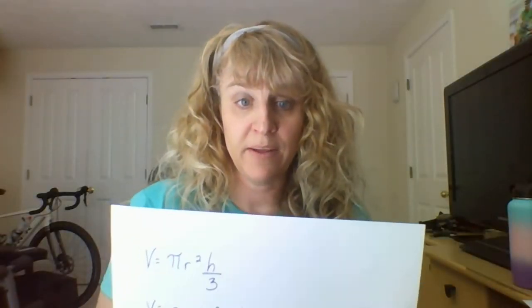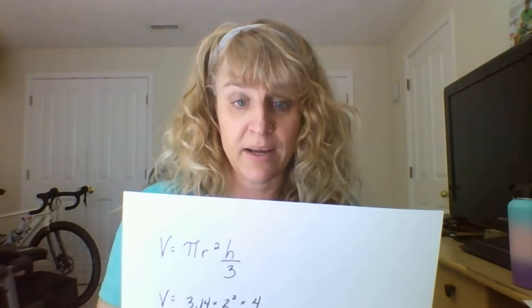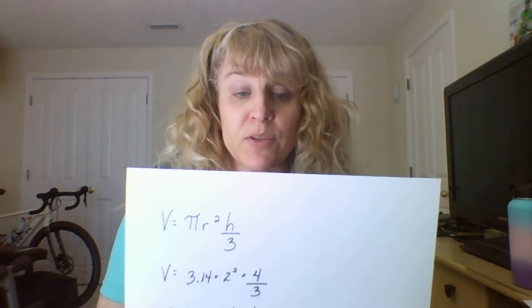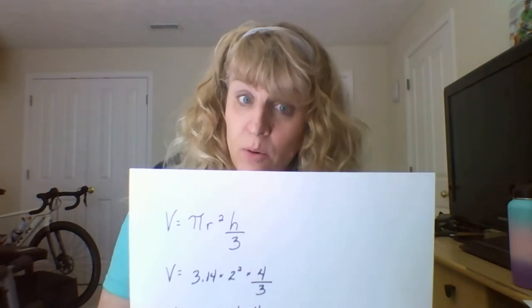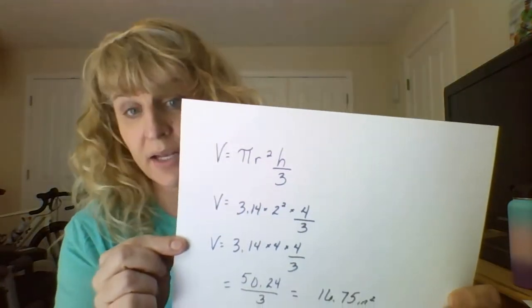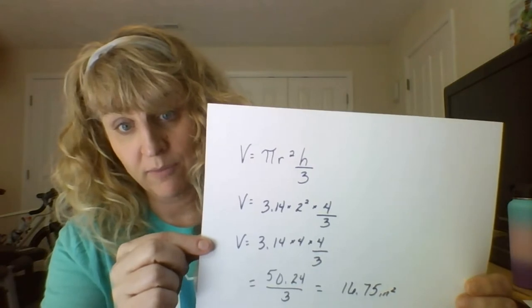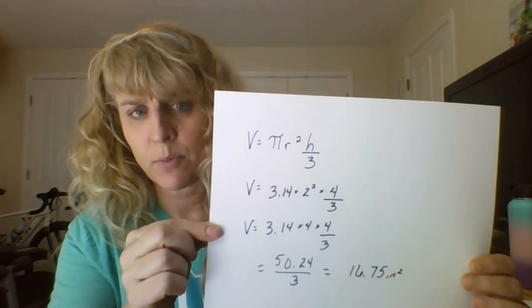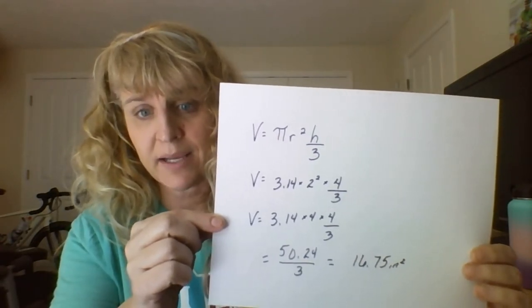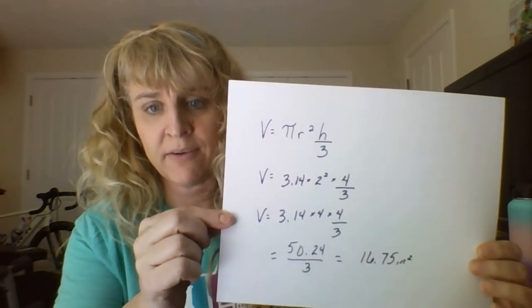Plugging into the formula: v equals pi r squared times height divided by 3, so v equals 3.14 times 2 squared times 4 divided by 3. Doing powers first, 2 squared equals 4, giving us 3.14 times 4 times 4 divided by 3. Multiplying those out gives 50.24, then dividing by 3 gives 16.75 cubic inches.